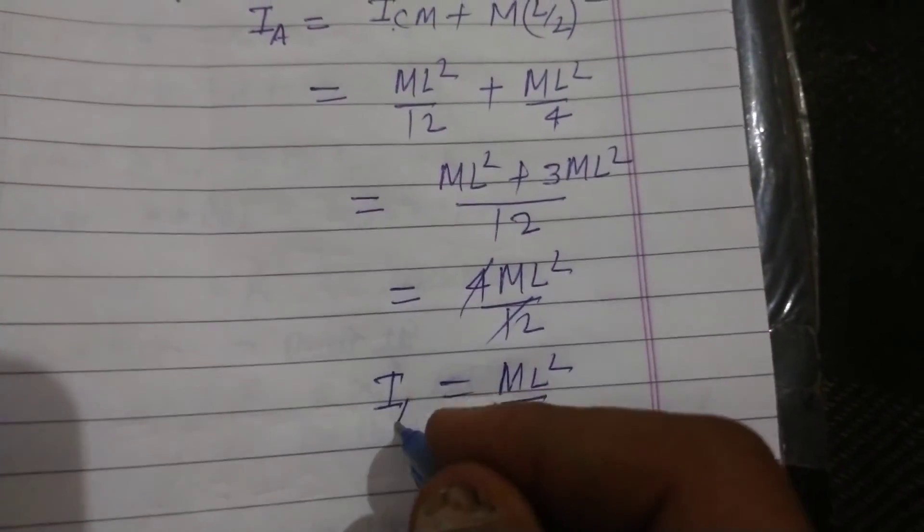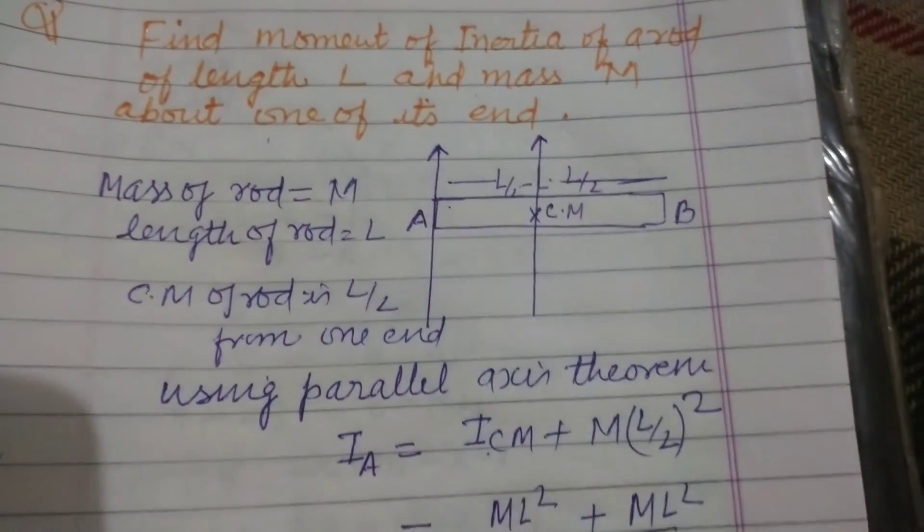So this is the moment of inertia about the axis which is passing through one of the ends of the rod.